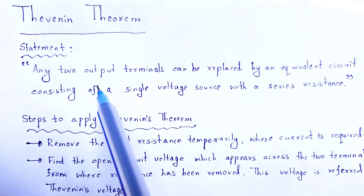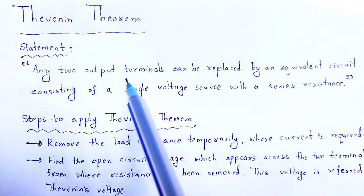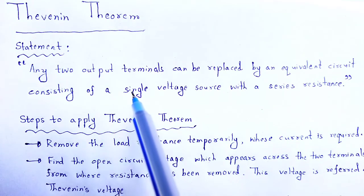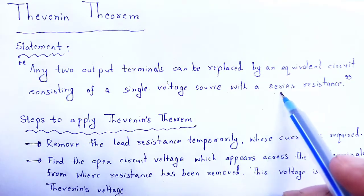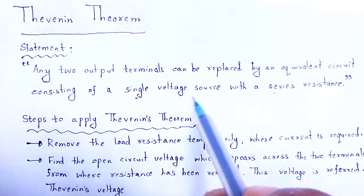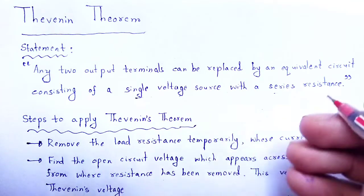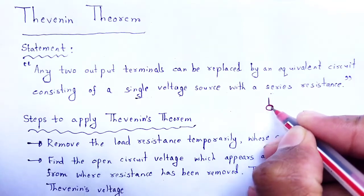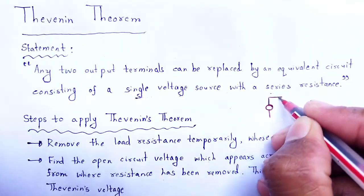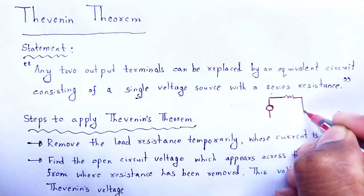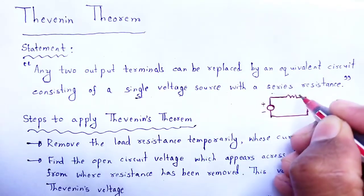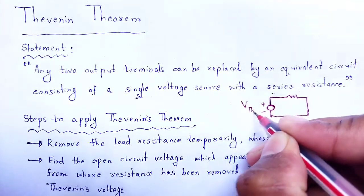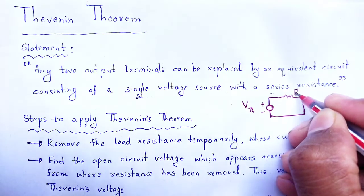The statement of Thevenin's theorem: any two output terminals can be replaced by an equivalent circuit consisting of a single voltage source with a series resistance. That single voltage source is known as Thevenin voltage, and that resistance is known as Thevenin resistance.